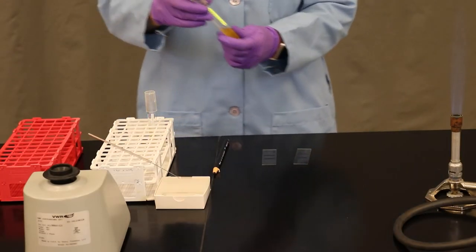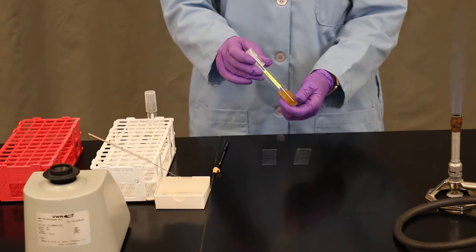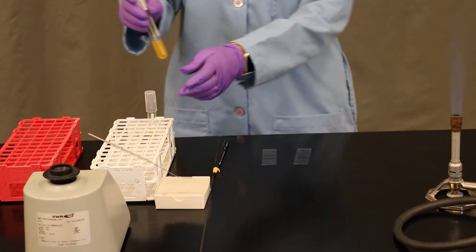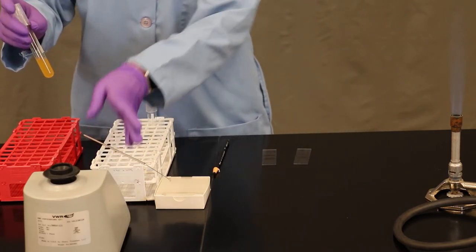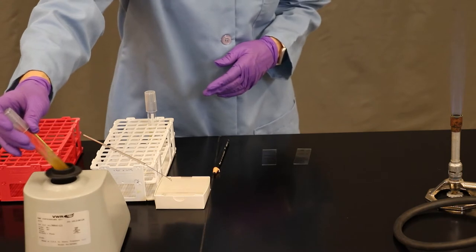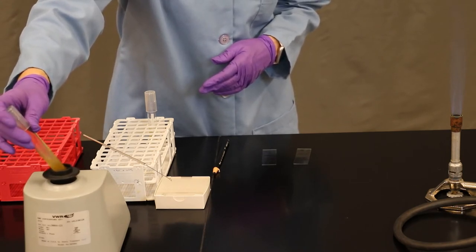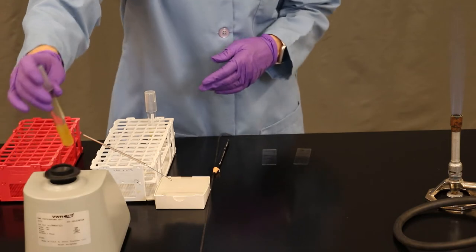We're going to start with a broth culture of Staphylococcus aureus, and the first thing you should always do with your broth is make sure to vortex it in order to mix it. We're holding the cap down, angling the tube on the vortexer and mixing for about five seconds.